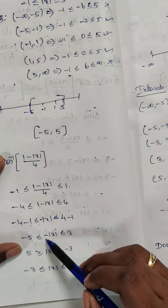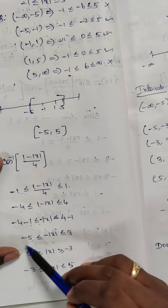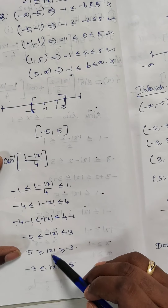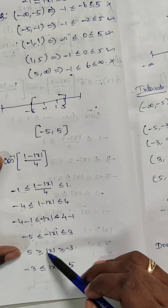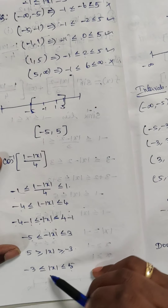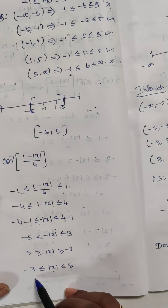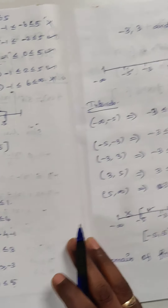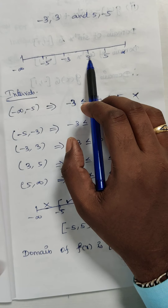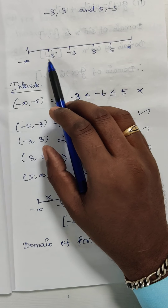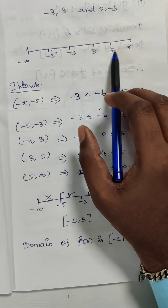Taking 1 to both sides: minus 4 minus 1 less than or equal to minus mod of x less than or equal to 4 minus 1, which gives minus 5 less than or equal to minus mod of x less than or equal to 3. When we multiply through by minus 1, the inequalities change sign, giving us: minus 3 less than or equal to mod of x less than or equal to 5. On the real line, the key points are minus 5, minus 3, 3, and 5. So the intervals are: minus infinity to minus 5, minus 5 to minus 3, minus 3 to 3, 3 to 5, and 5 to infinity.